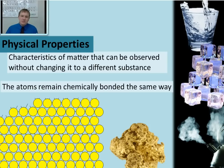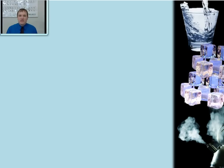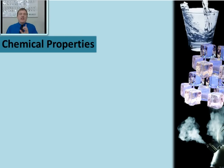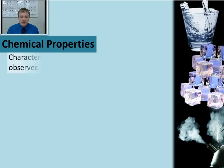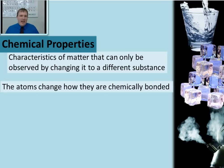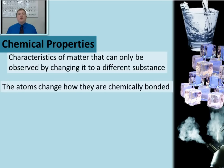What happens when a substance does change to a different substance? That would be a chemical property and a chemical change, as the substance changes the arrangement of its atoms to make an entirely new substance that wasn't there before. A chemical property can only be observed by changing one substance to another — in other words, the atoms change how they are chemically bonded together.